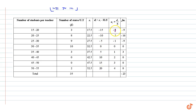Now we will calculate ui. ui is calculated by di / 5, where 5 is the class size. When di = −15, ui = −15/5 = −3. When di = −10, ui = −10/5 = −2, and so on.